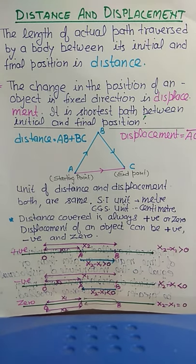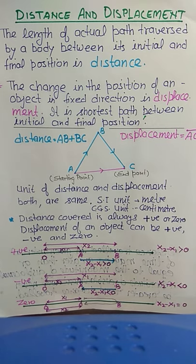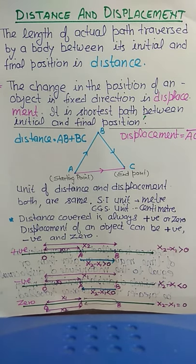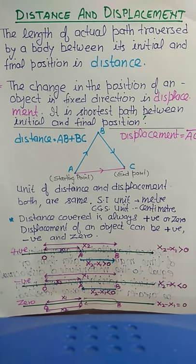What about the units of distance and displacement? Both have the same unit. The SI unit is meter, CGS unit is centimeter. Other units include kilometer, centimeter, and millimeter. An important point: distance covered is always positive or zero — either the object doesn't move (zero) or it moves and covers a positive distance. Displacement, on the other hand, can be positive, zero, or negative — all three conditions are possible.